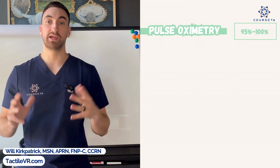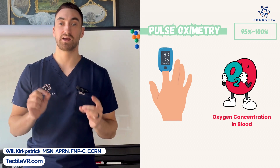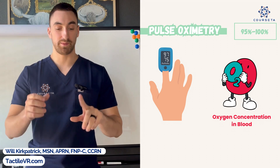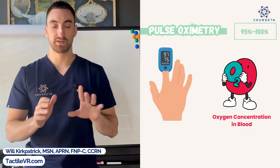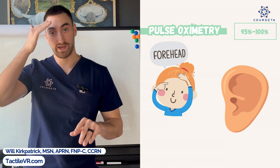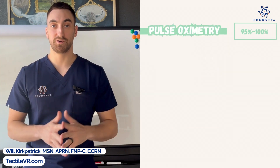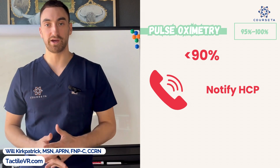SpO2 is pulse oximetry. The normal range for a healthy adult is 95 to 100%. For a COPD patient, the normal range is 88 to 92%. Pulse oximetry measures the concentration of oxygen in the blood, typically via a sensor placed over the finger. Other sites include the earlobe or forehead. For a healthy adult, if pulse oximetry falls below 90%, contact the healthcare provider.